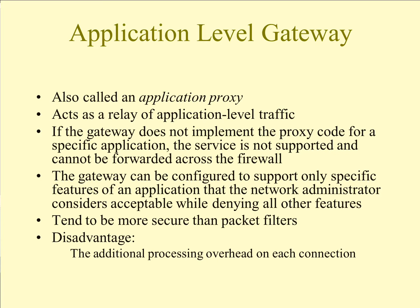An application level gateway, also called an application proxy, acts as a relay of application level traffic. The user contacts the gateway using a TCP/IP application, and the gateway asks the user for the name of the remote host to be accessed. When the user responds, the gateway contacts the application on the remote host and relays TCP segments containing the application data between the two endpoints. If the gateway does not implement the proxy code for a specific application, the service is not supported and will not be forwarded across the firewall. This can be used to support only specific features of an application the administrator considers acceptable. It is more secure than packet filters; however, there is additional processing overhead on each connection.